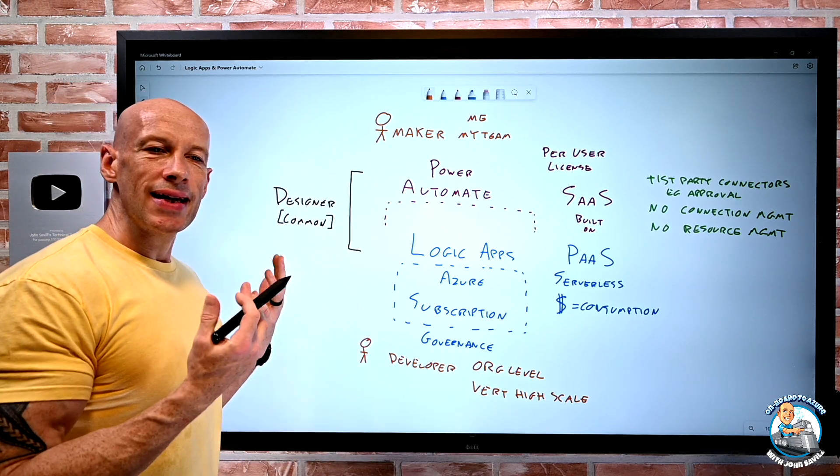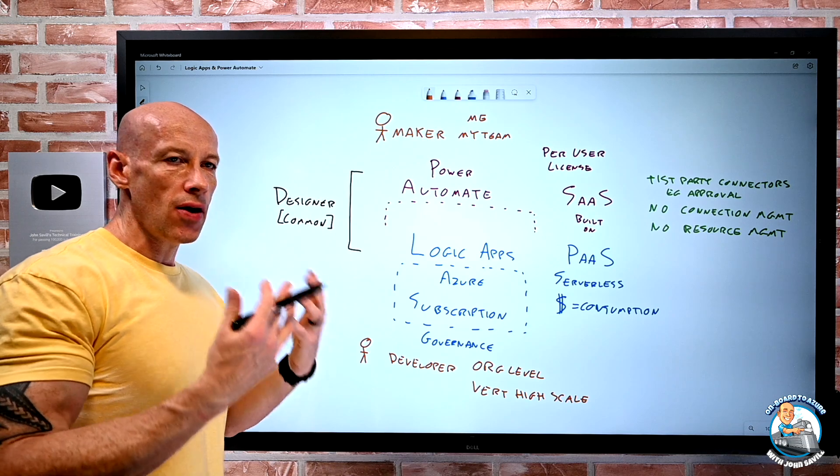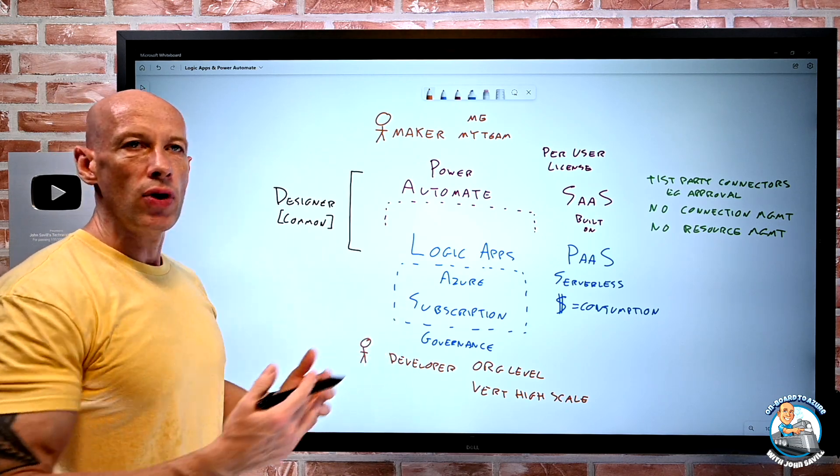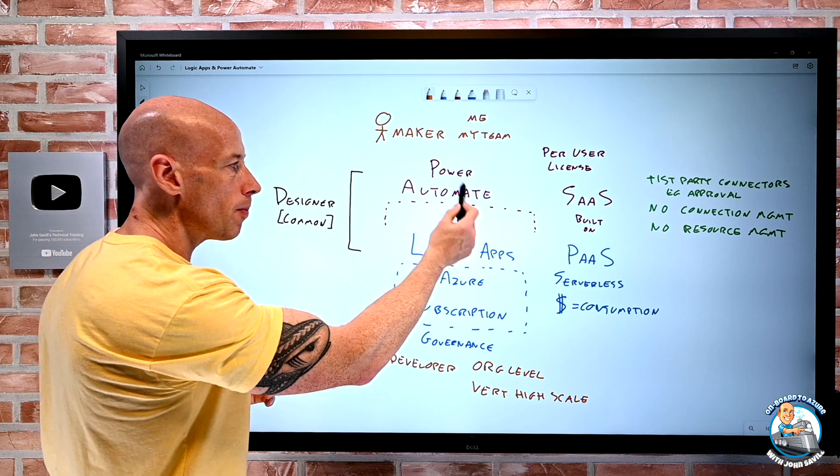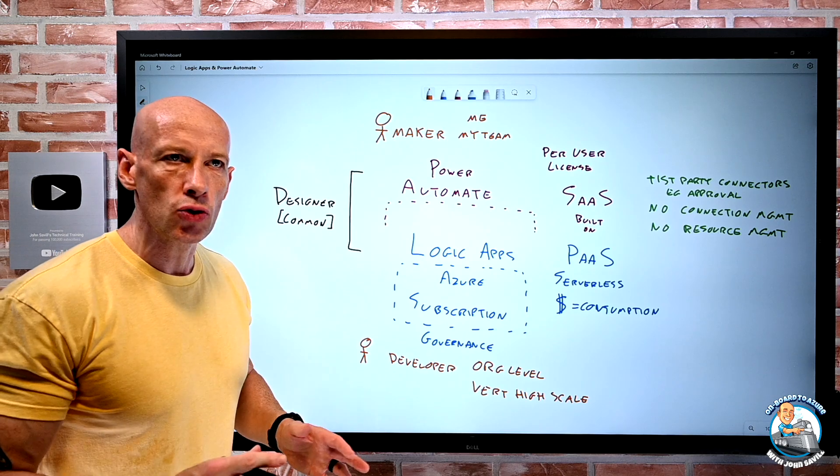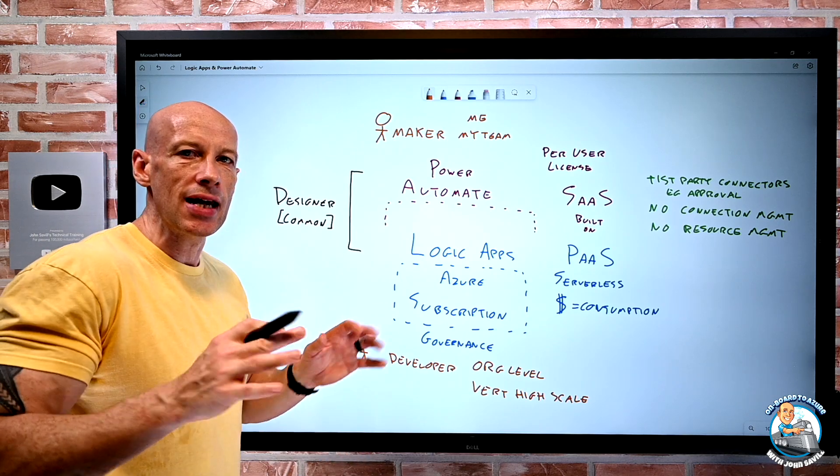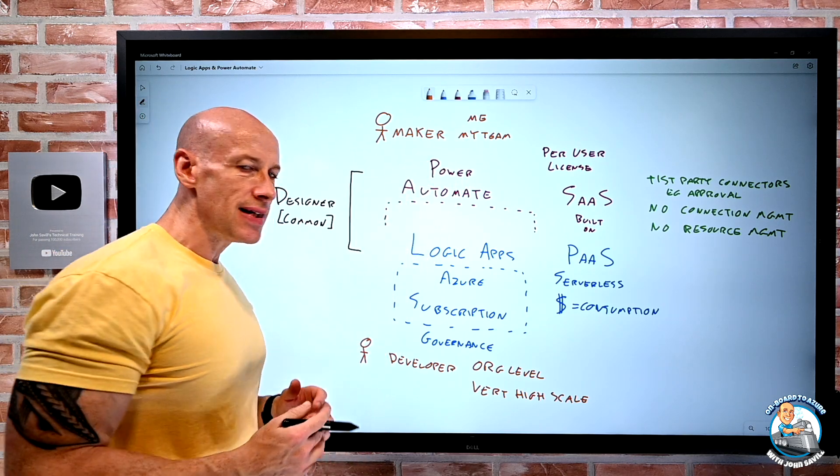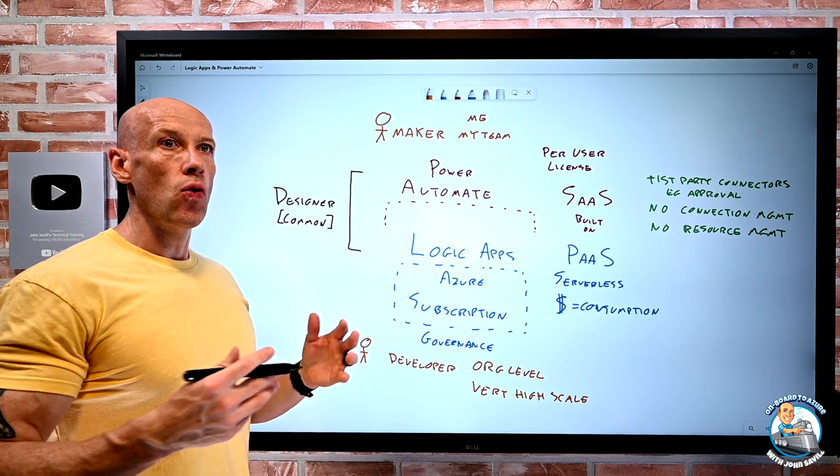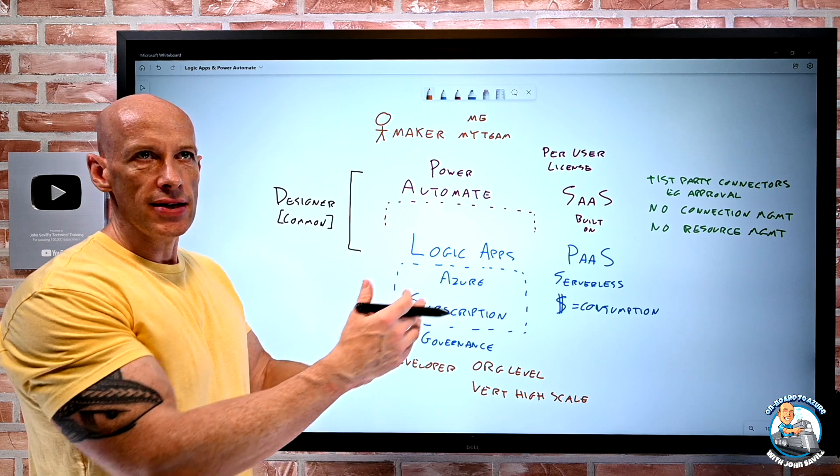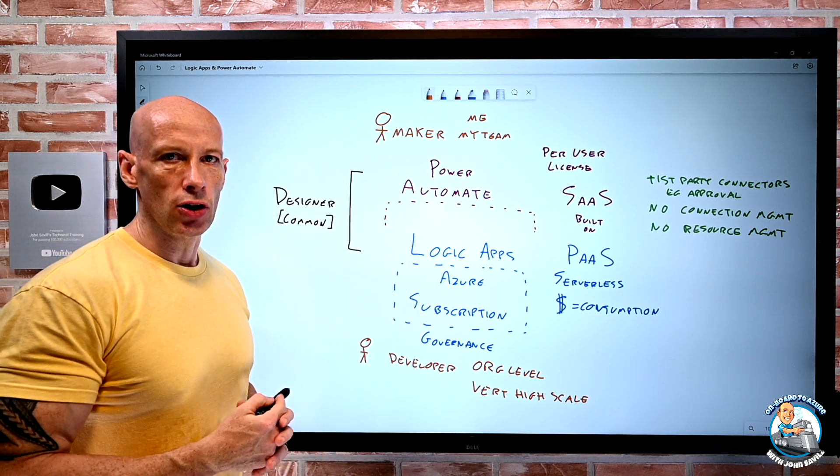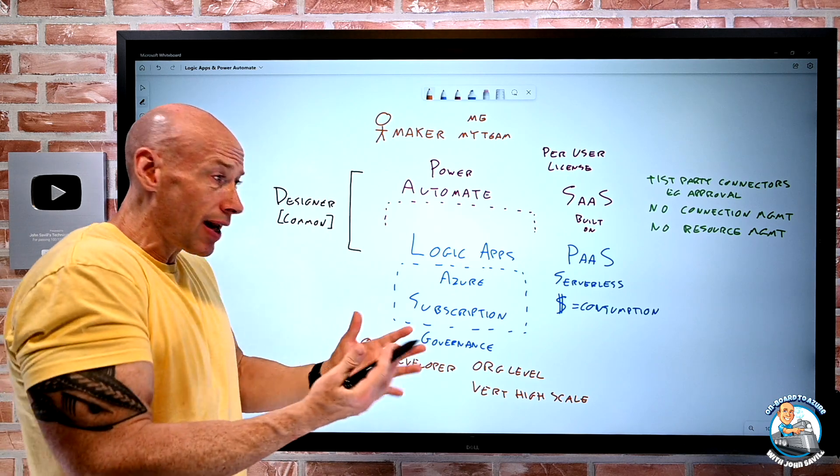And that's really the way to think about it. I wouldn't think of a versus. It's what is the persona that's leveraging and what is the target? Hey, I want to create something for me or my team, some nice automation, maybe triggering it from Teams or SharePoint or something like that. Hey, Power Automate is a fantastic solution. I don't have to worry about subscriptions or resource management or connection management or any of those things. Very easy to get up and running. I'm trying to create something for my organization. It's some very high scale job. Then Logic Apps is the right solution.